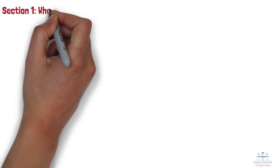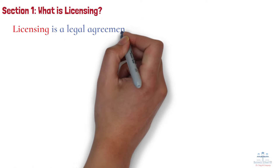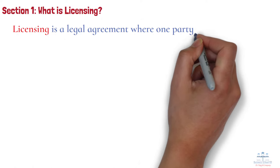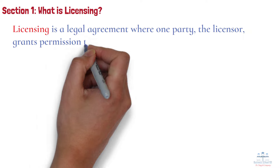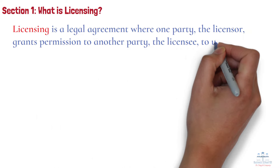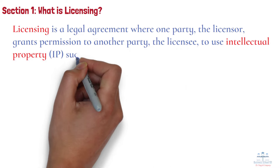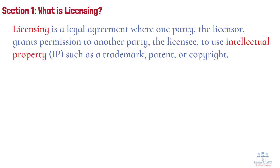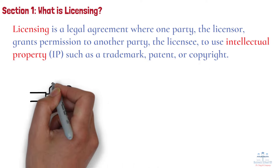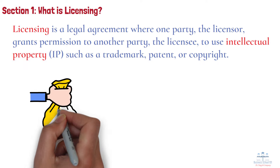Section 1: What is licensing? Licensing is a legal agreement where one party, the licensor, grants permission to another party, the licensee, to use intellectual property (IP), such as a trademark, patent, or copyright. In exchange, the licensor typically receives a fee or royalty from the licensee.